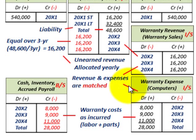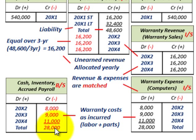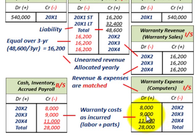Now for warranty costs as incurred for labor and parts: on the balance sheet we credit cash, inventory, or accrued payable. The amounts are $8,000 in 20x2, $9,000 in 20x3, and $11,000 in 20x4 — totaling $28,000 in warranty costs over three years. On the income statement we recognize warranty expense by those same amounts: $8,000, $9,000, and $11,000 respectively.